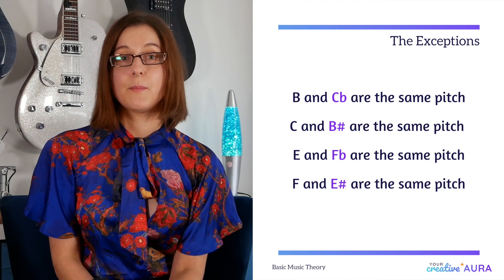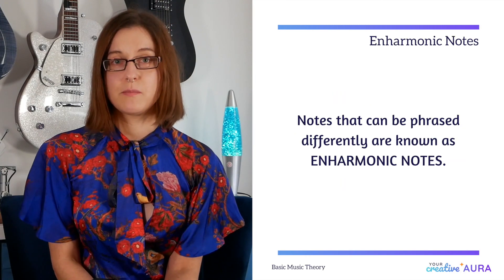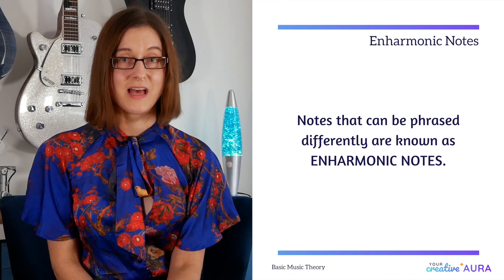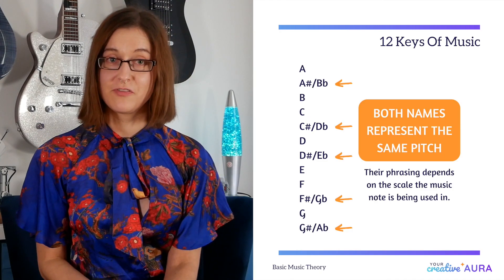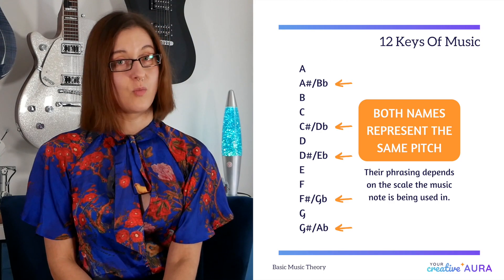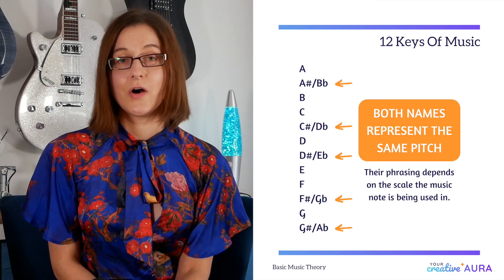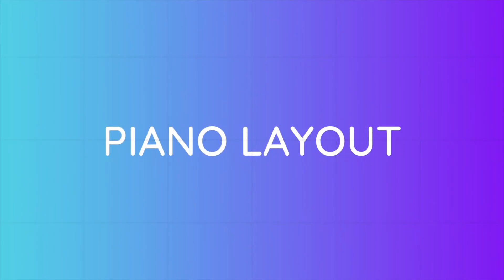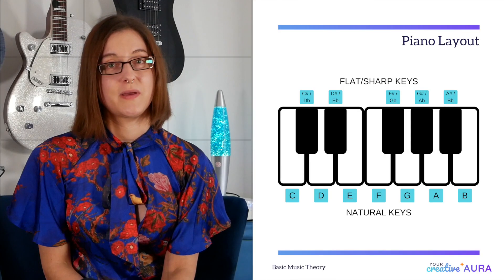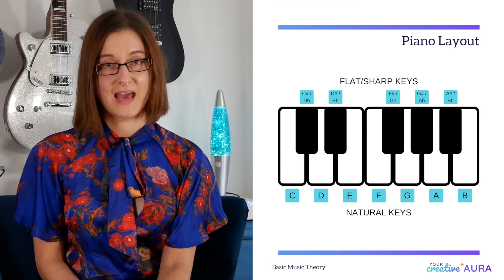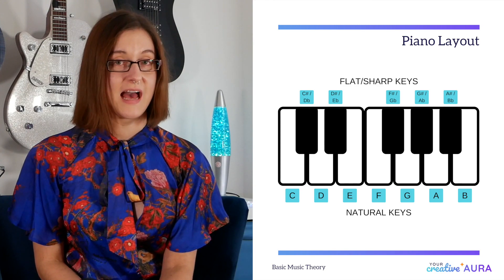Now, notes that can be phrased differently but have the same pitch are known as enharmonic notes. So for example, A sharp and B flat are enharmonic notes, as well as C sharp and D flat. Understanding the layout of notes is best represented using a piano or a keyboard. The white keys on a piano are known as the natural notes of the alphabet, and the black keys are known as the flat or sharp notes.